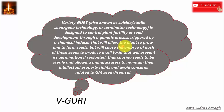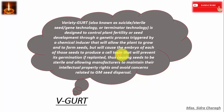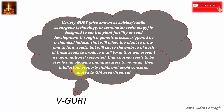Variety-based technology is designed to control plant fertility or seed development through a genetic process that is triggered by a chemical inducer. This allows the plant to grow and form seeds, but it causes the embryo of each of those seeds to produce a cell toxin. The cell toxin then prevents germination if replanted, so they cause the seed to be sterile, allowing manufacturers to maintain their intellectual property rights and avoid concerns related to genetically modified seed dispersion.